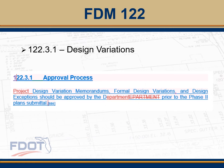Another update: this has kind of always been in the FDM at some point, but we're asking that designers get these approved prior to the Phase 2 submittal. In previous years we said early in the design process, but we would like these submitted and approved by the department prior to Phase 2. Phase 2 plans include a lot of cross-sectional information, details, and quantities are starting to get calculated, so to avoid any duplication of efforts we would like these approved early in the design process.